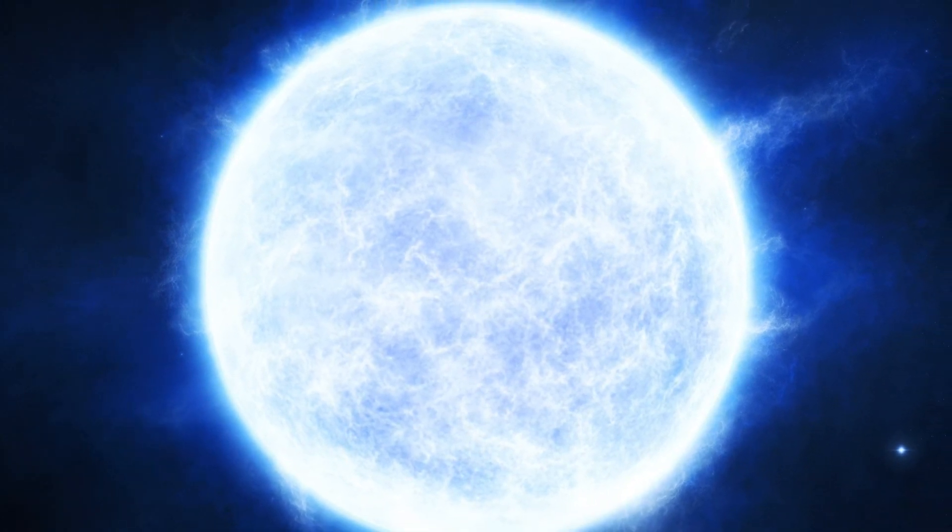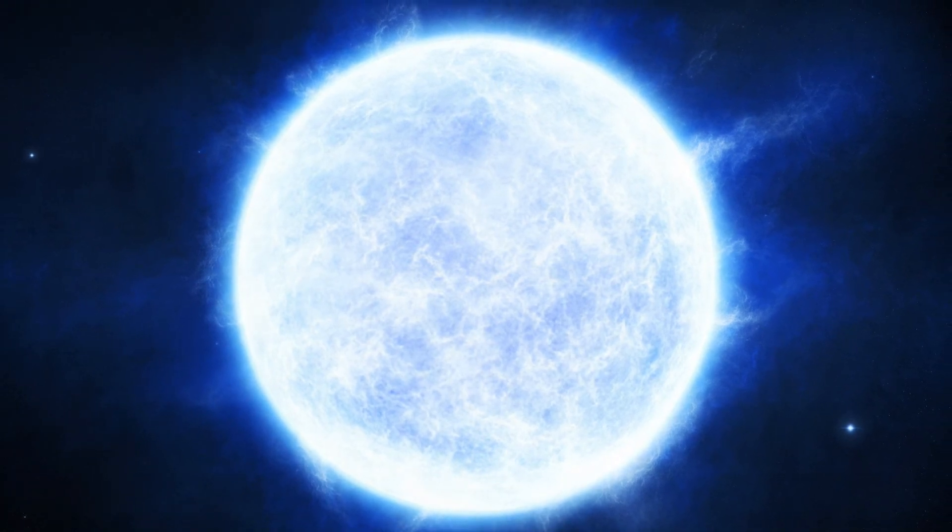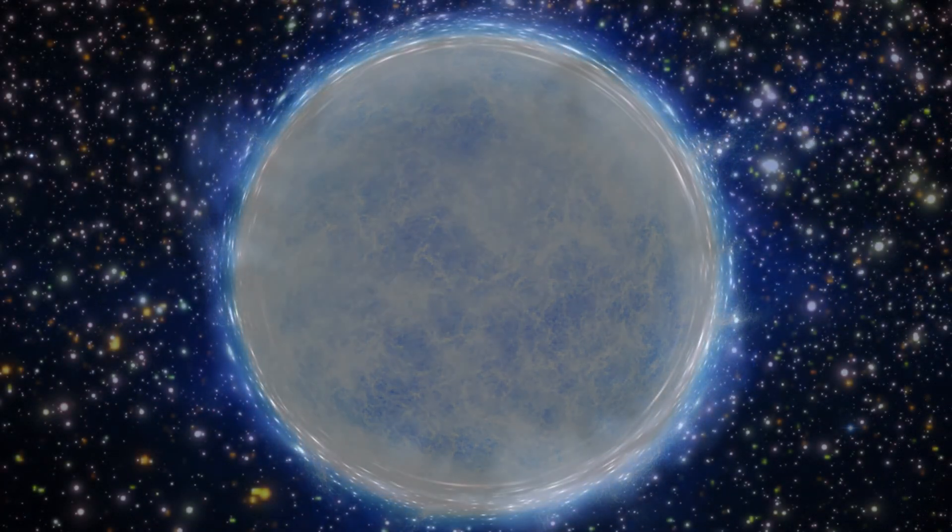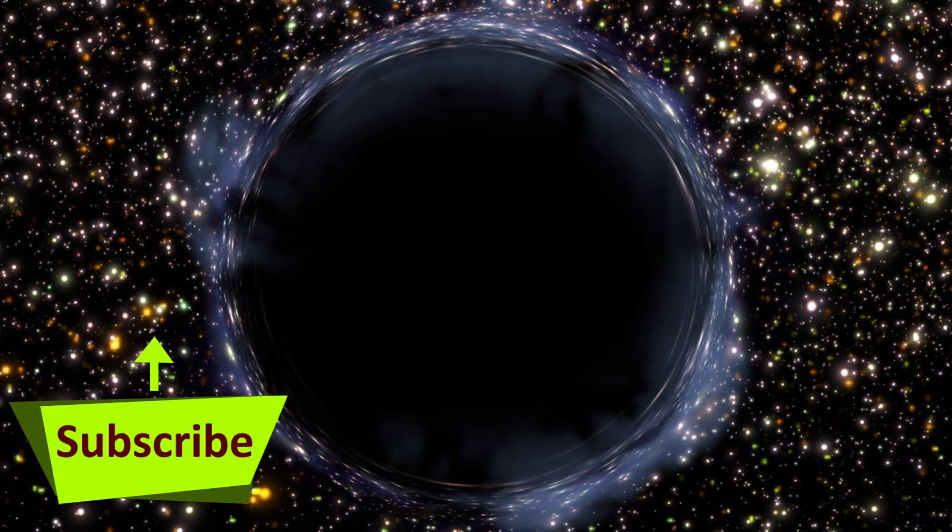It radiates its leftover heat for billions of years. When its heat is all dispersed it will be a cold dark black dwarf, essentially a death star.